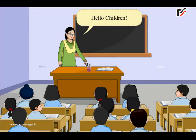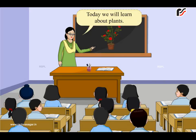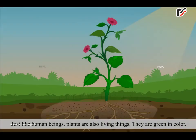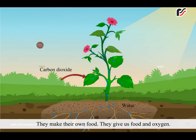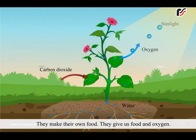Hello children! Today we will learn about plants. Just like human beings, plants are also living things. They are green in color. They make their own food. They give us food and oxygen.